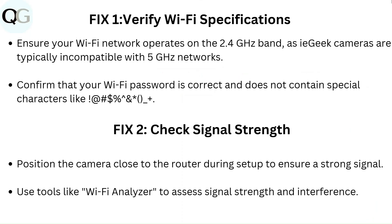Fix 1: Verify Wi-Fi specifications. Ensure your Wi-Fi network operates on the 2.4 GHz band, as iGeek cameras are typically incompatible with 5 GHz networks. Confirm that your Wi-Fi password is correct and does not contain special characters like exclamation mark, at sign, hashtag, and many more.